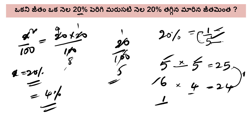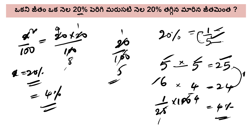1 by 25 into 100. 1 by 25 into 100, so the answer is 4%. This is the first problem. Next problem.